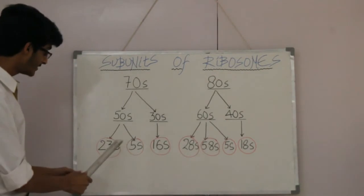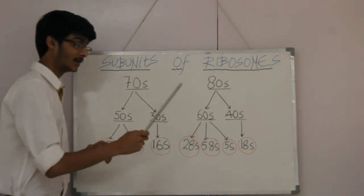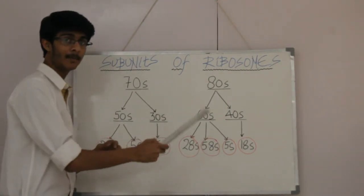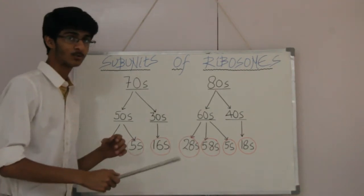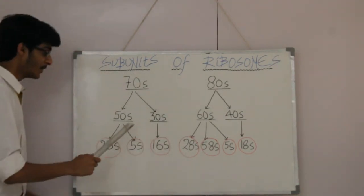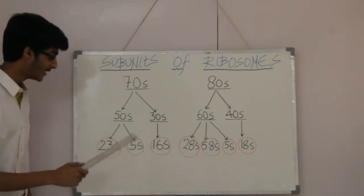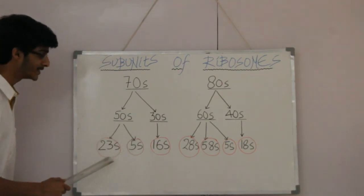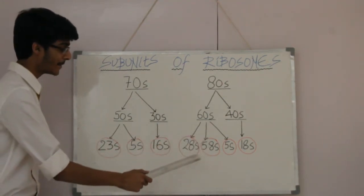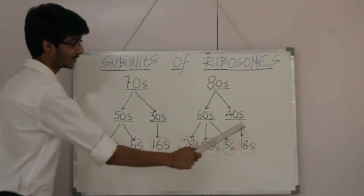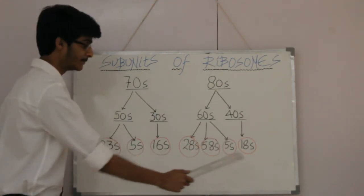To memorize the main subunits, divide the number by 2 and subtract 2. For example, 50 divided by 2 is 25, minus 2 gives 23. When you divide 60 by 2 you get 30, minus 2 gives 28. And 40 divided by 2 is 20, minus 2 gives 18S.